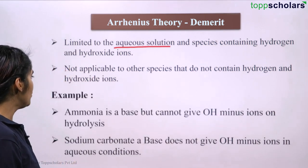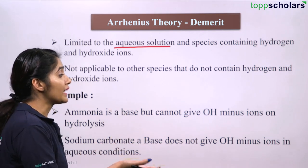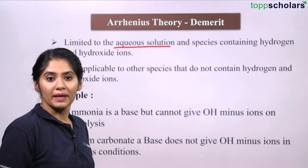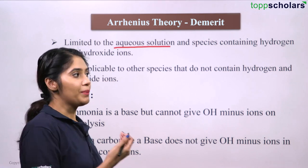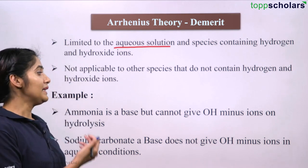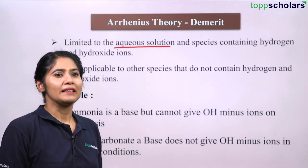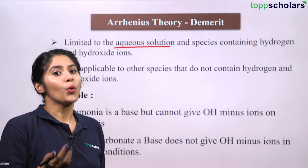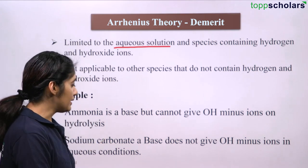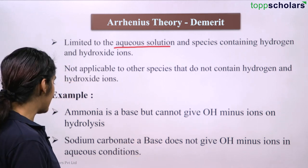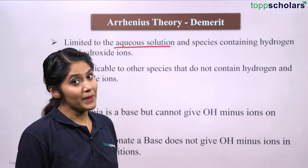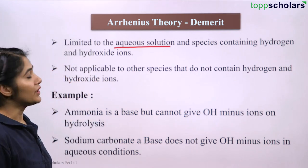It is not applicable to other species that do not contain hydrogen and hydroxide ions. For example, what about ammonia? It is a base but cannot give OH- ions on hydrolysis. But it does raise the pH above 7, making it a base — yet it does not give out OH- ions. Another example: sodium carbonate is a base but does not give out OH- ions in aqueous solution and does not even have an OH group. This is a demerit of Arrhenius theory.